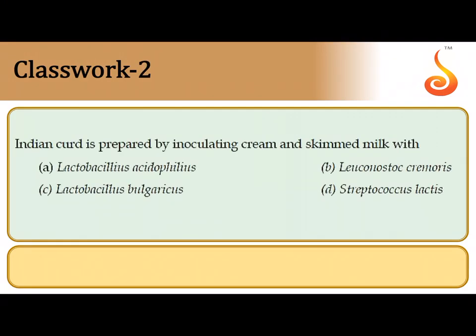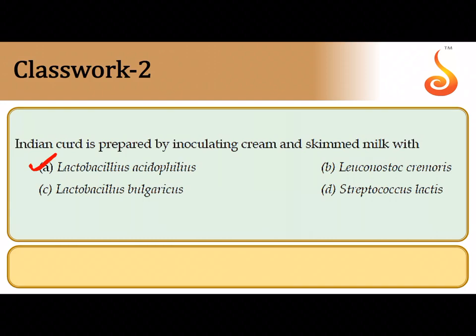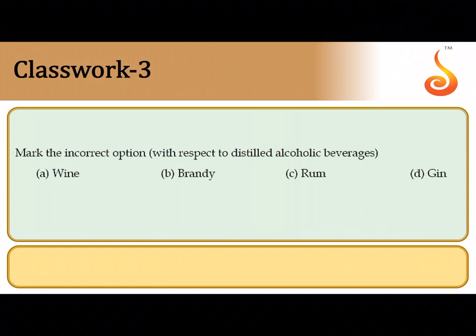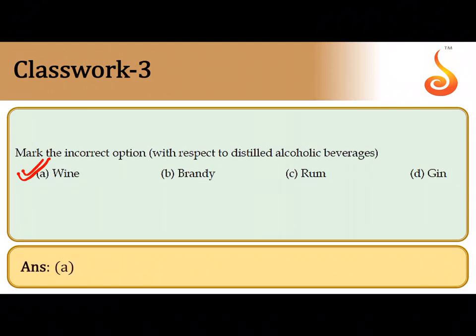Indian curd is prepared by inoculating cream and skim milk with certain bacteria. The most important bacterium used in preparing Indian curd is Lactobacillus acidophilus. Bulgaricus is also employed in making yogurt, but since the question says Indian curd, the more appropriate answer is Lactobacillus acidophilus. The third question asks to mark the incorrect option: among distilled alcoholic beverages, wine is undistilled, so wine is the odd one out.